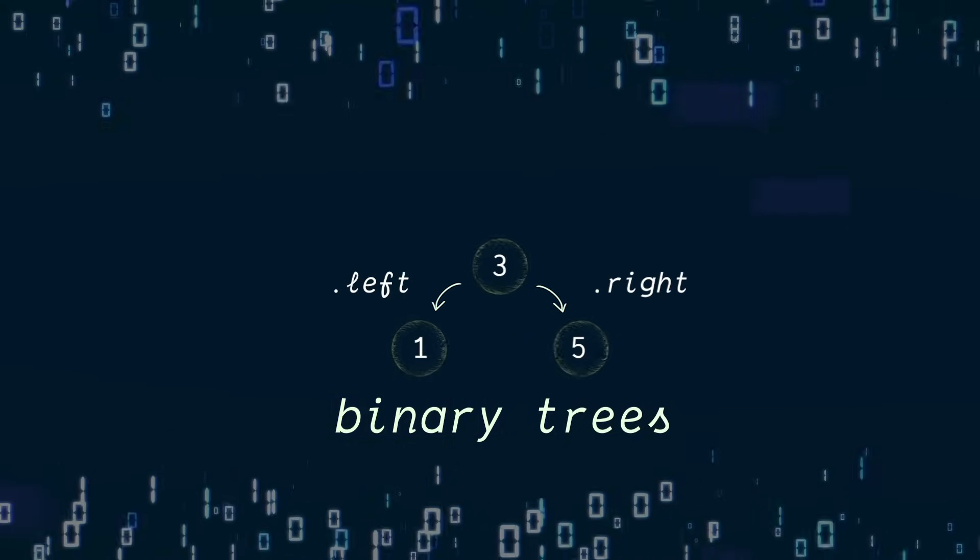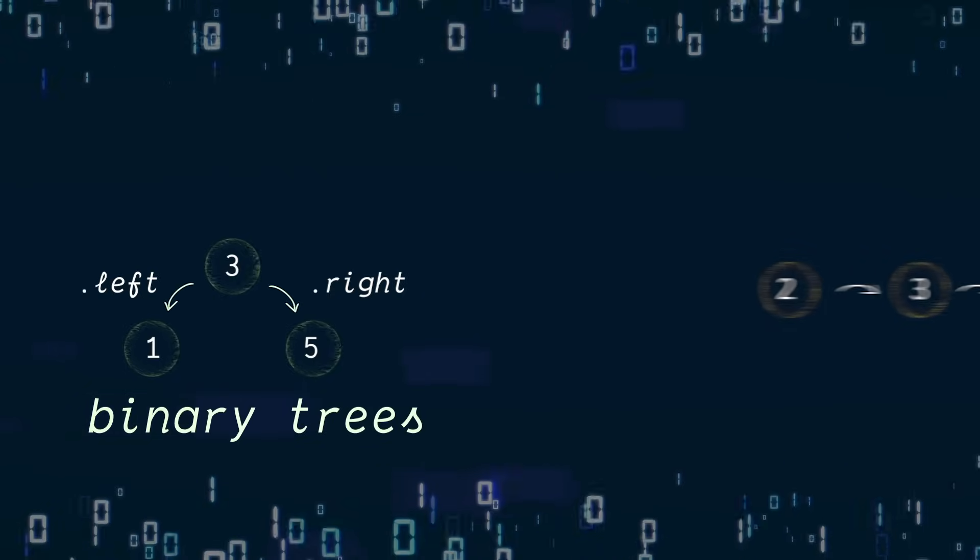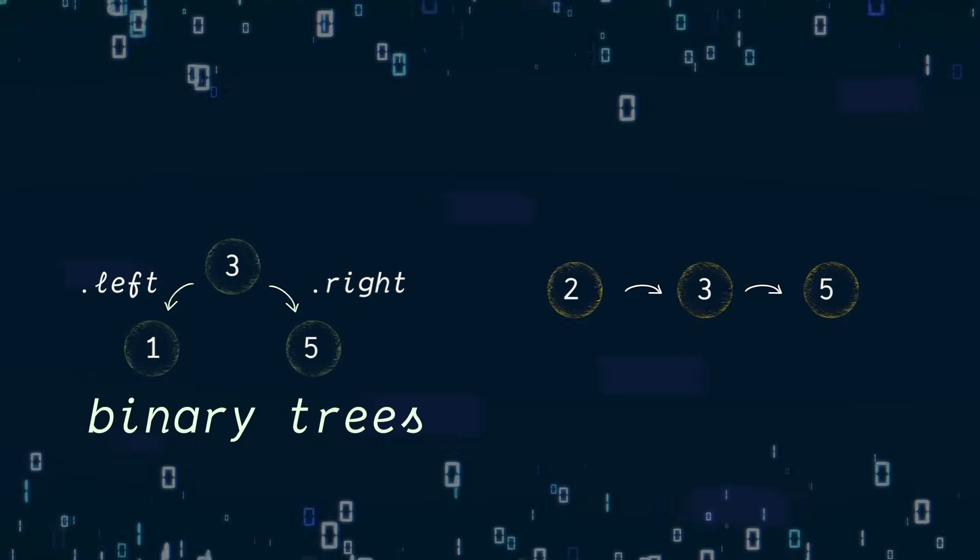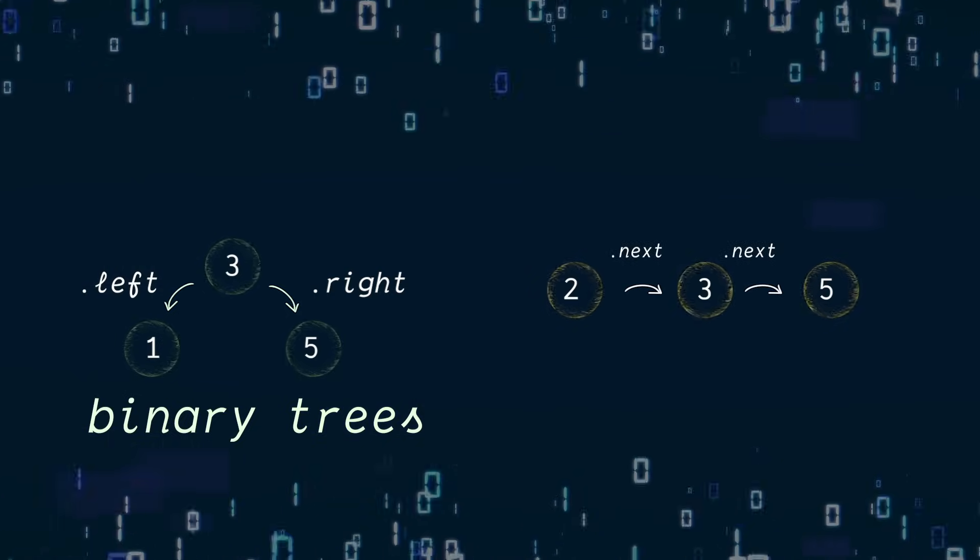And these children are represented in the interface of our node with the properties left and right. That is to say, left and right pointers. Comparing this to the linked list where we have a single dimension, dot next, dot next, dot next. Here we have two dimensions, left and right.